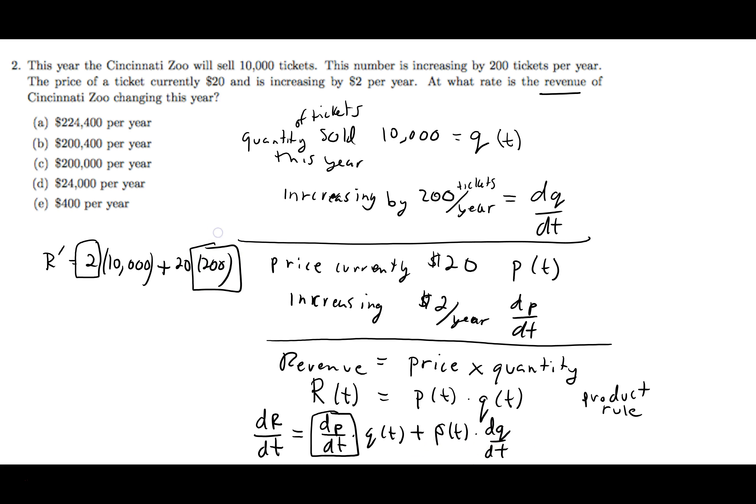And so we take 2 times 10,000 and we add to that 20 times 200. So that's going to be 20,000 and then we have another 4,000 on top of that for the answer 24,000 per year, dollars per year.